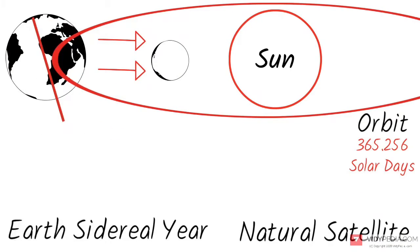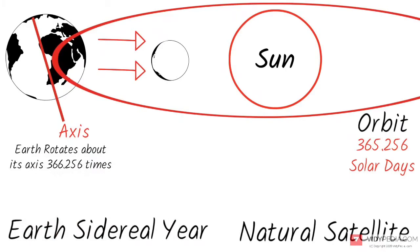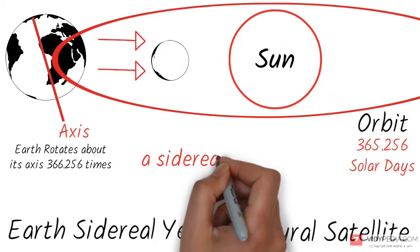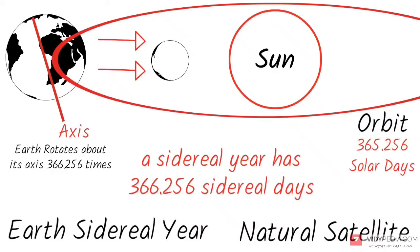During this time, Earth rotates about its axis 366.256 times. That is, a sidereal year has 366.256 sidereal days.